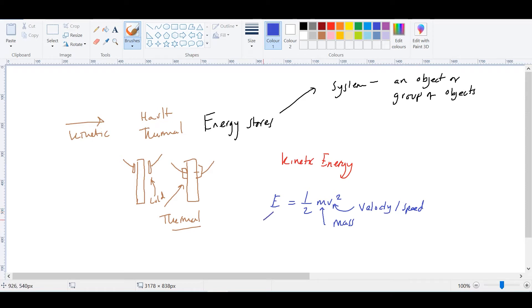And E is the kinetic energy. So let's go through the units as well - units are very important. Kinetic energy is measured in joules. Mass is measured in kilograms. And the velocity speed is measured in meters per second.